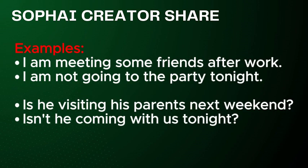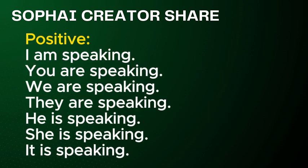Examples of present continuous for future plans: I am meeting some friends after work. I am not going to the party tonight. Is he visiting his parents next weekend? Isn't he coming with us tonight? Positive forms: I am speaking. You are speaking. We are speaking. They are speaking. He is speaking. She is speaking. It is speaking.